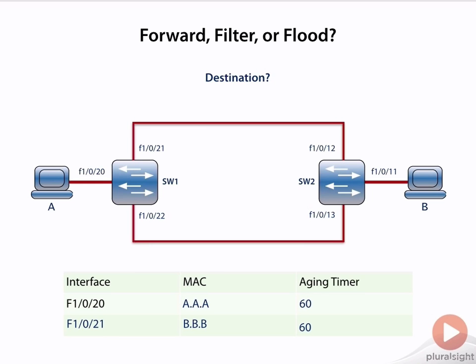In this case, we do have the destination in our MAC address database, and where we see that destination, A, is on F1-0-20.